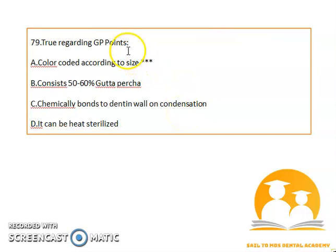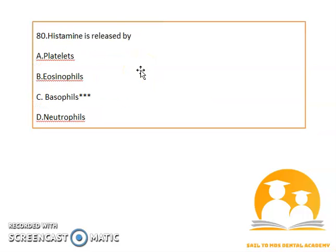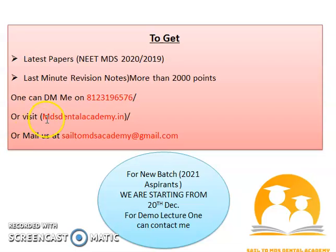Regarding GP points: they are color-coded according to size. Remember, histamine is released by basophils. That was all for Part 3. If anyone needs the latest papers from 2020 or 2019, they can DM on the given number or visit the academy.